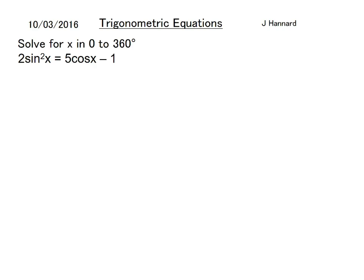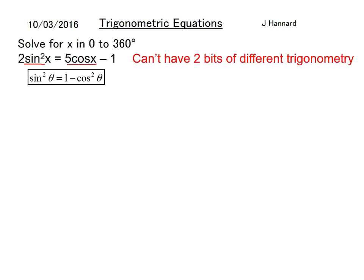Now here we go, this is the more complex. This is where we use the trigonometric identities because we've got sin and cos in the same equation, but you can't have two bits of different trigonometry in the same equation. So we'll have to think of this one: sin²θ equals one minus cos²θ. So we can replace this sin²x with one minus cos²x. And we go back to what we said before and change it to the first letter of the trig and call that two brackets: one minus c² equals 5c minus 1. Expand that bracket.